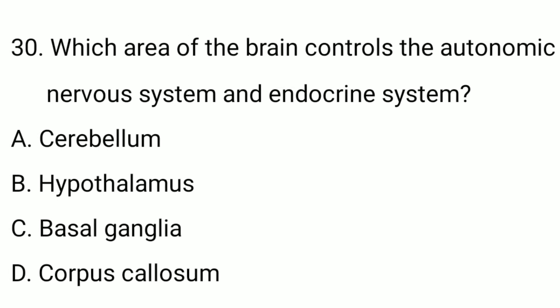Question number thirty: which area of the brain controls the autonomic nervous system and endocrine system? The correct option is option B — hypothalamus.